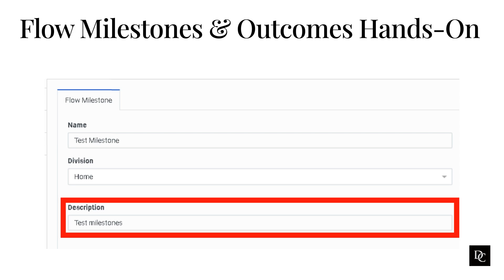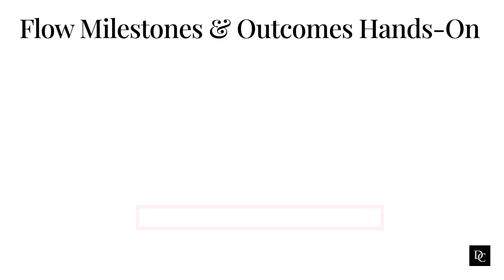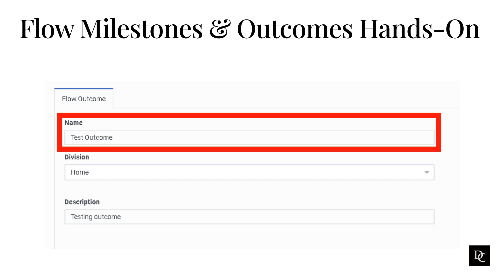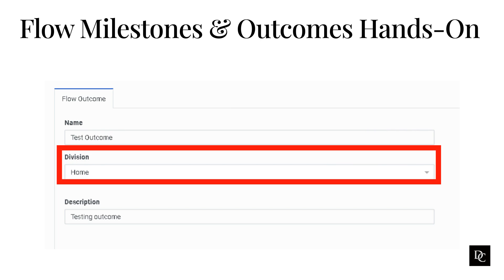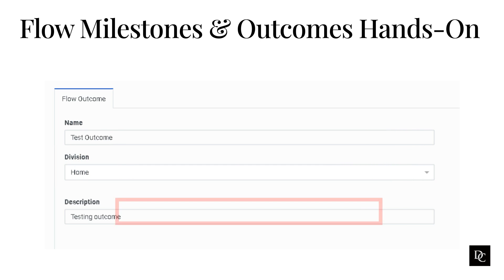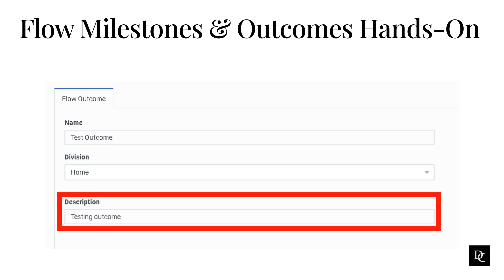Let's move on and create a flow outcome. Administrators and contact center managers use flow outcomes to gather data about self-service success. Click Flow Outcomes under Architect, then click the plus button. Type a descriptive name for the outcome — for example, Check Balance. Choose which division to put the outcome in; Home is the default. Add a more detailed description, then click Save.